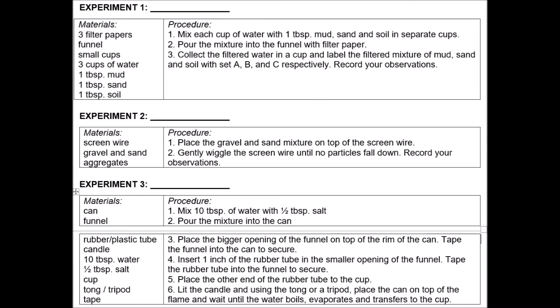So let us answer this activity. So we have here some experiments that have materials and procedure, and we will say what kind of separation techniques are appropriate or were done for this experiment. So, number one, our procedure is: mix each one cup of water with one tablespoon mud, sand, and salt in separate cups. Pour the mixture into the funnel with filtered paper. Collect the filtered water in a cup and label the filtered mixture of mud, sand, and water with set A, set B, respectively.